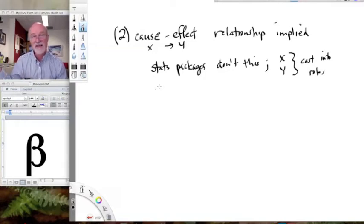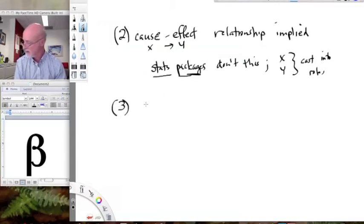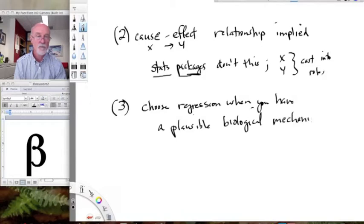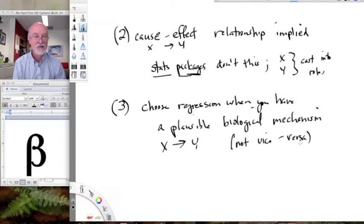But remember, SAS and statistics packages generally are just high-speed computational idiots. They're doing your bidding. So you have to tell it which is the independent and dependent variable. When do you choose regression rather than correlation? You choose regression when you have a plausible biological mechanism. So when you have a plausible, defensible, in other words, biological mechanism by which x causes variation in y and not vice versa. Because it's not talking about association or codependency anymore. We're talking about directional effects of x on y. And you have a possible explanation for that.